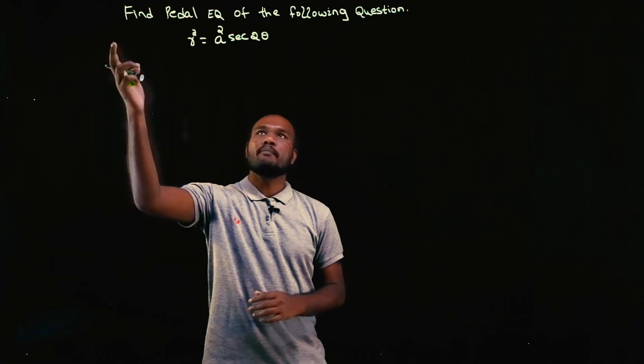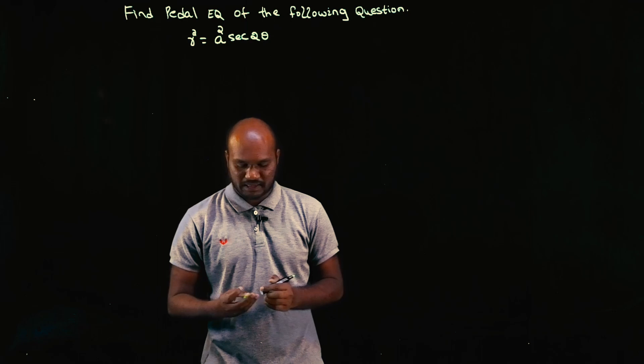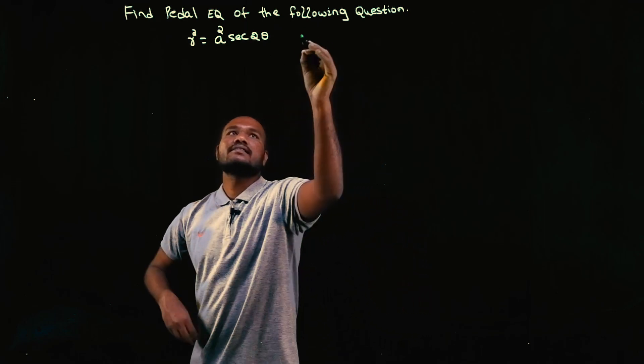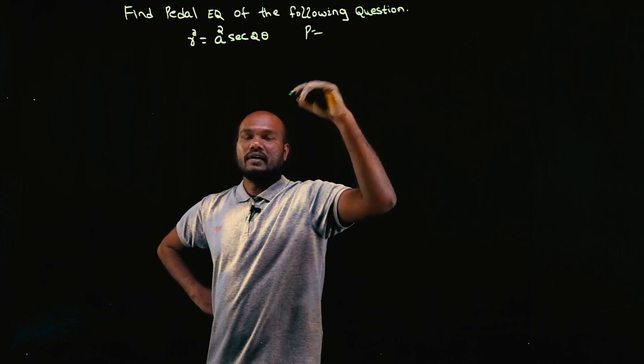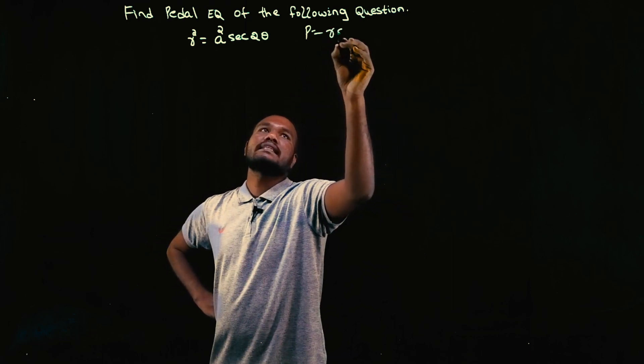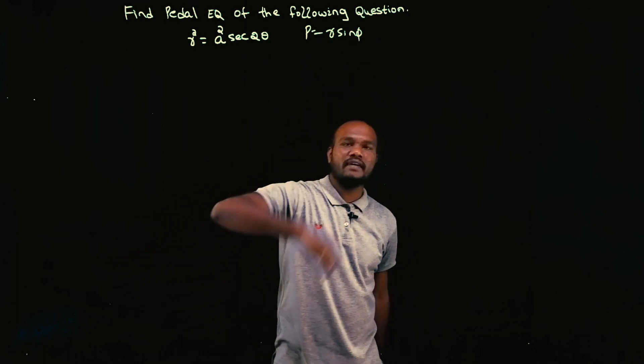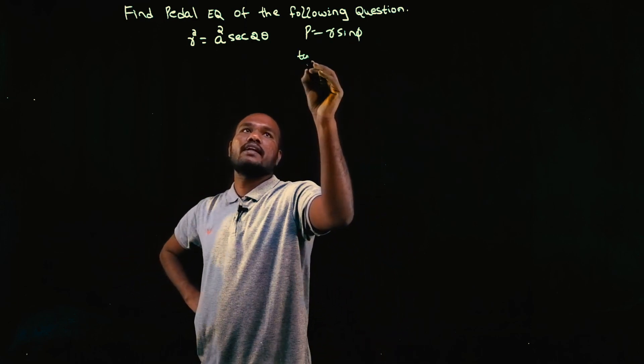We have to find the pedal equation for the following question. A pedal equation is an equation that doesn't have theta. p = r sin φ is the equation. To find this, we need the phi value. To find φ, we need tan φ = r dθ/dr.